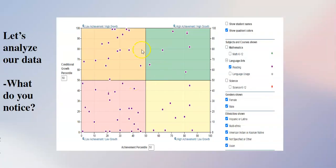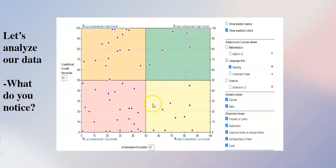I would then bring up the quadrant without student names and let the class tell me what they notice. I love bringing them in — not telling them, but letting them figure it out. They might say, 'Oh wow, we have a lot of kids in this pink zone.' They start to wonder which one is me. Then you can have an honest conversation: did we really try, did we fall asleep, were we not feeling well, and what can we do differently next time?